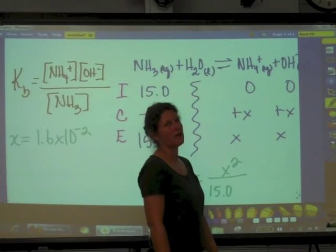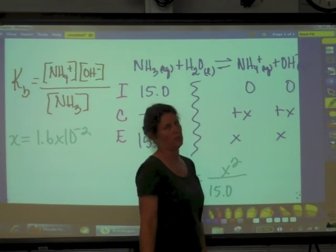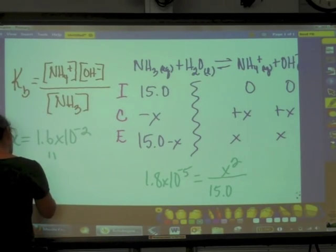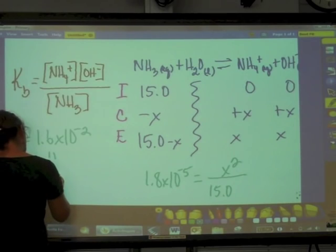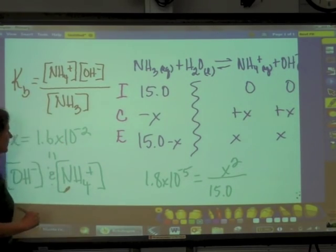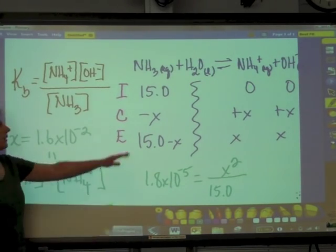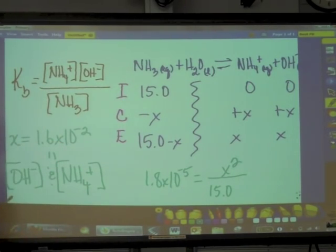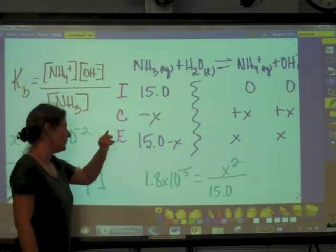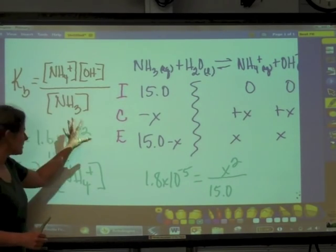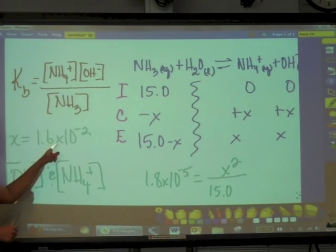X is the hydroxide ion concentration at equilibrium and the ammonium ion concentration at equilibrium. So it is the hydroxide and the ammonium. They're not asking us about the ammonia concentration at equilibrium. So we don't need to take this number and plug it in to find the equilibrium concentration. What are we trying to find? We're trying to find pH.